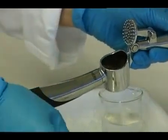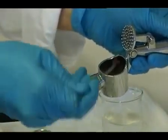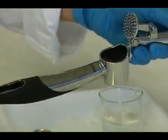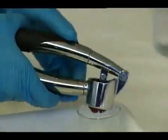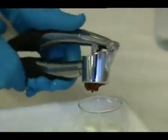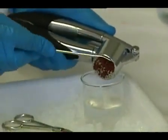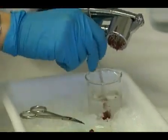Put the minced tissue into the tissue press and pass it through. After the tissue press transfer the material into the beaker with 50 ml of washing buffer and stir.